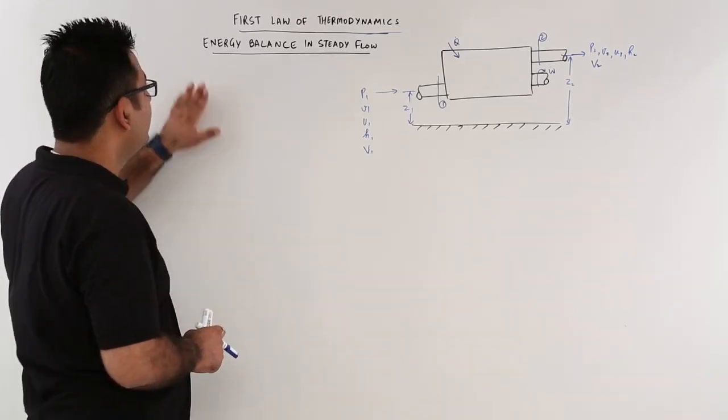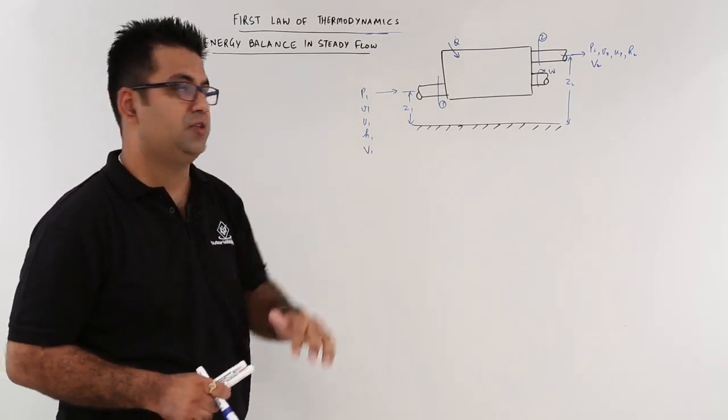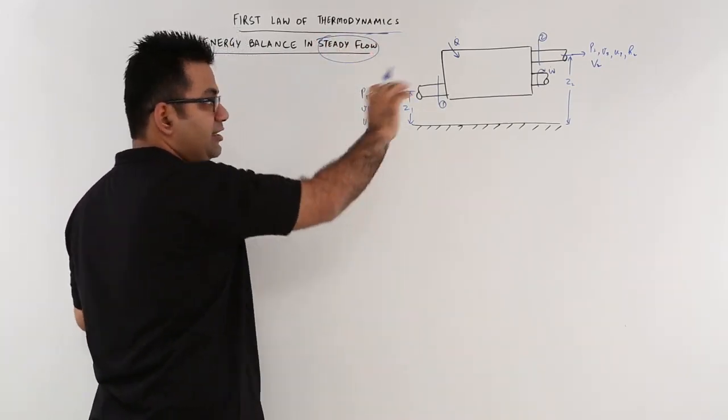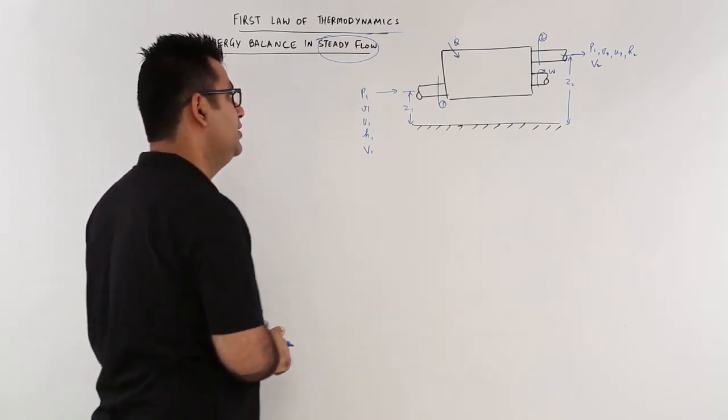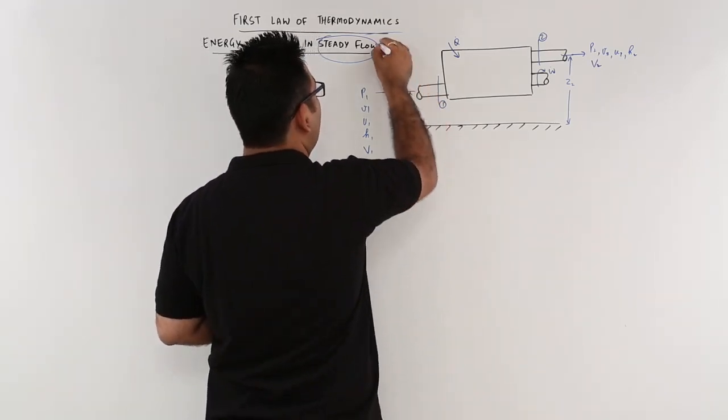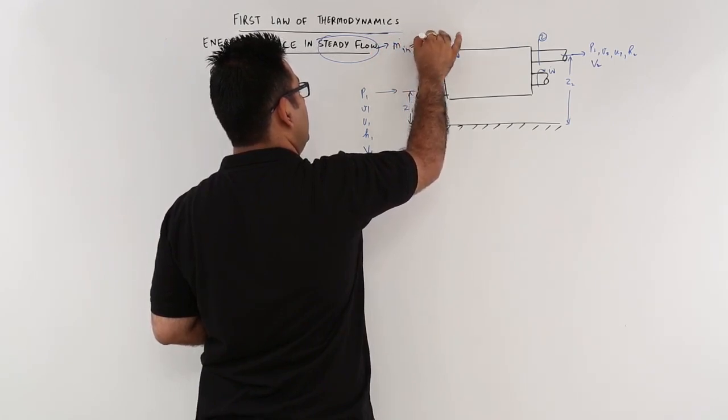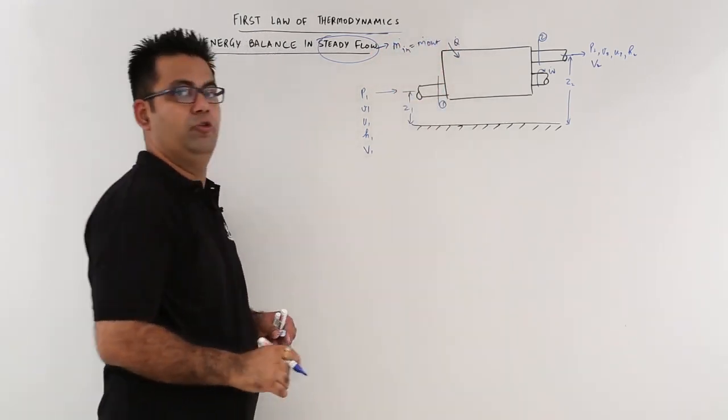Now let us pay attention to the energy balance in a steady flow process. Steady flow means that whatever mass enters, the same amount of mass leaves. So with steady flow, the rate of mass inflow is equal to the rate of mass outflow.